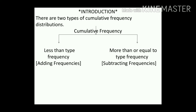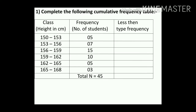Now let's begin Practice Set 7.4, Question Number 1: Complete the following cumulative frequency table. The first column is class — height in centimeter. The second column is frequency — number of students. We have to find out the less-than type cumulative frequency.